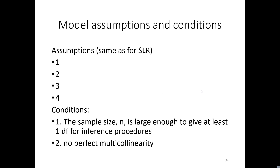Let's finish with model assumptions. There are four assumptions, exactly the same as in simple linear regression. The first is that the expected value of the errors is zero — the least squares technique forces this automatically. The second assumption is that all variances are constant across all values of X, which can be tricky and is often violated — especially with income, housing prices, or stock portfolios.